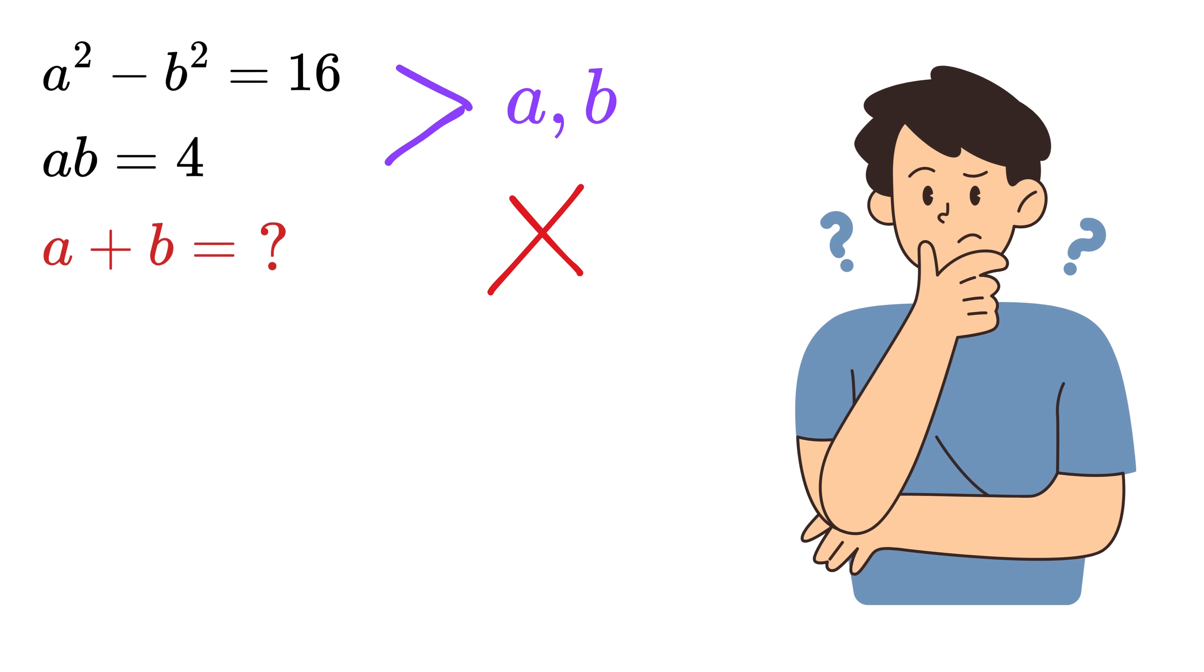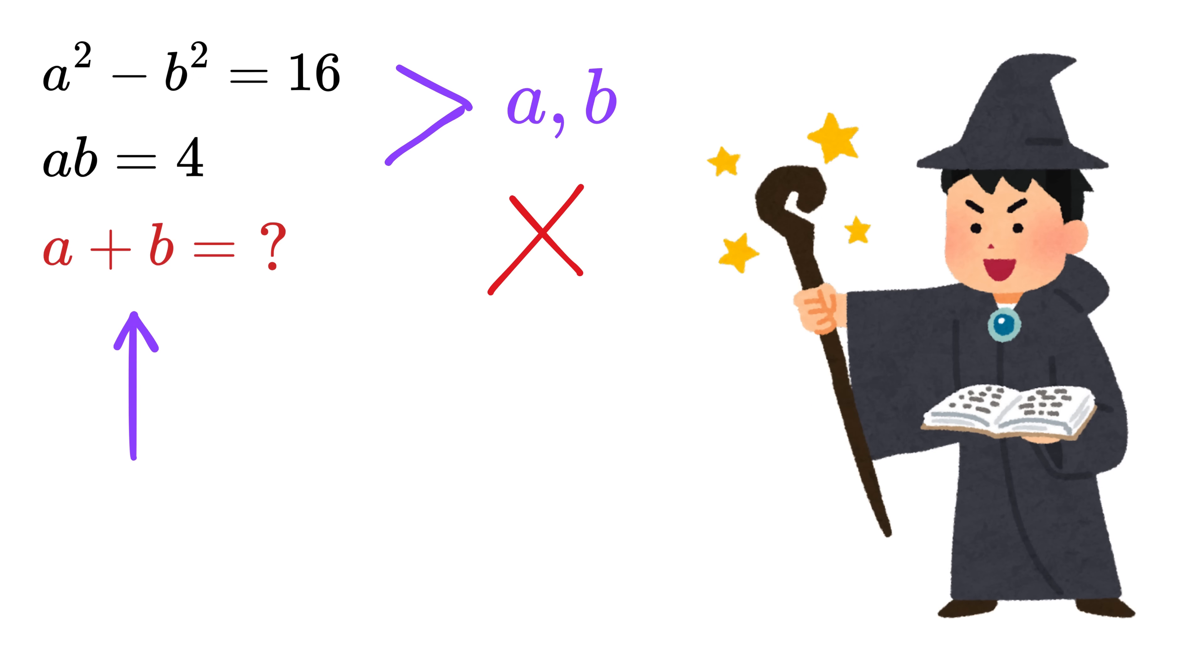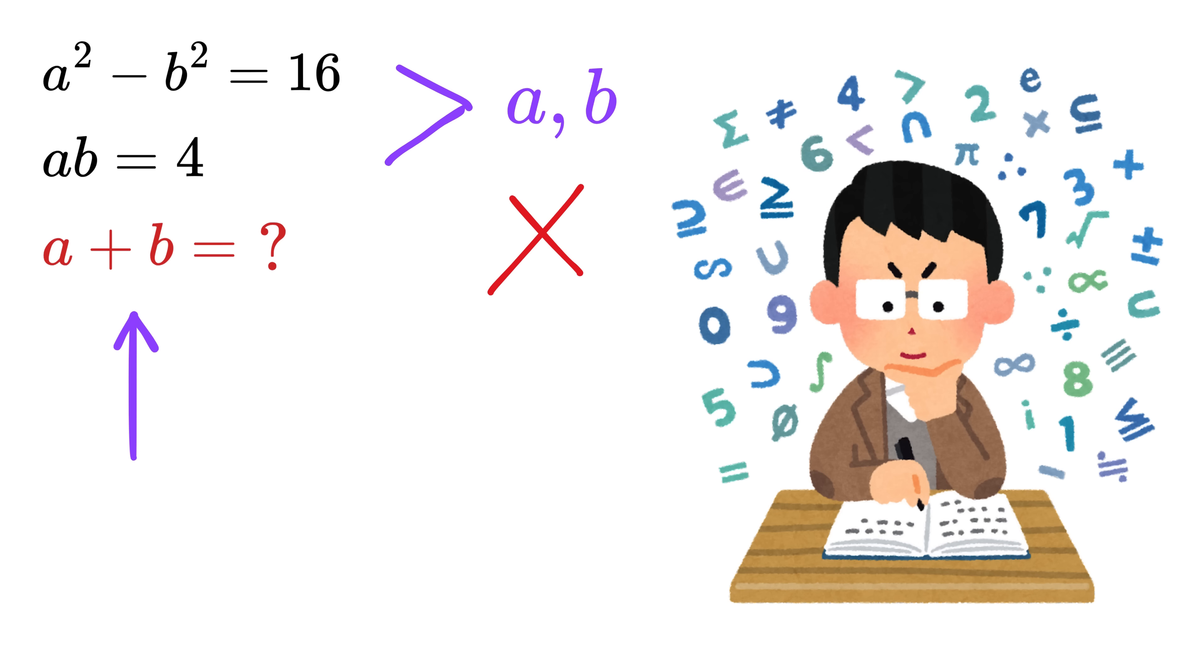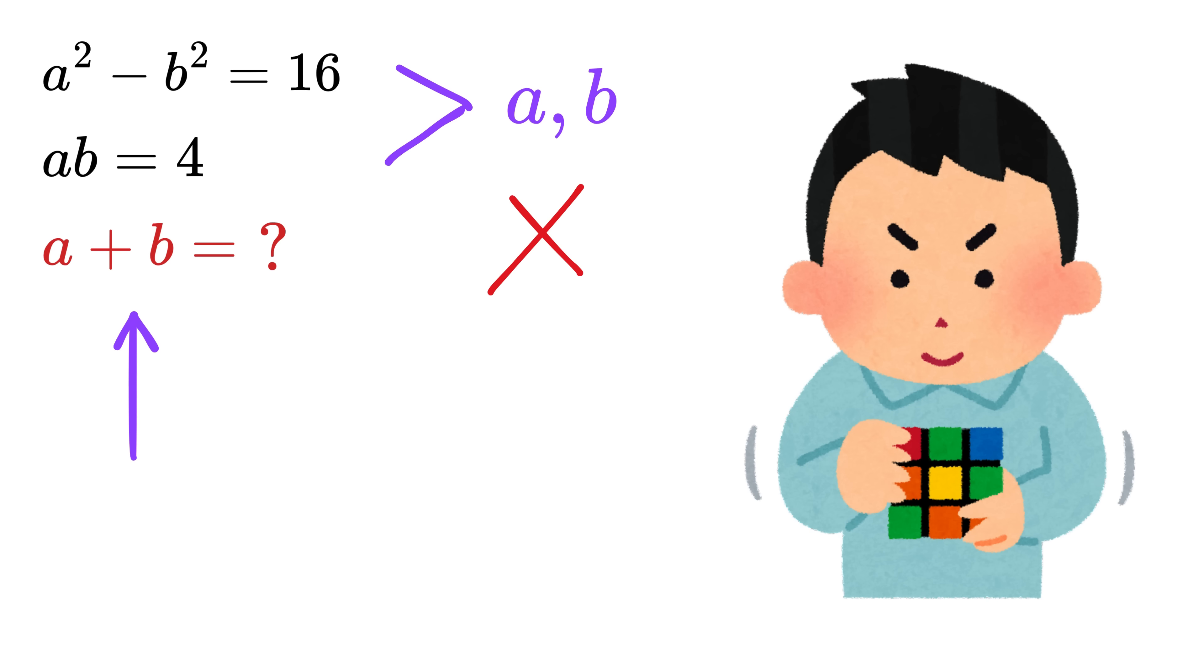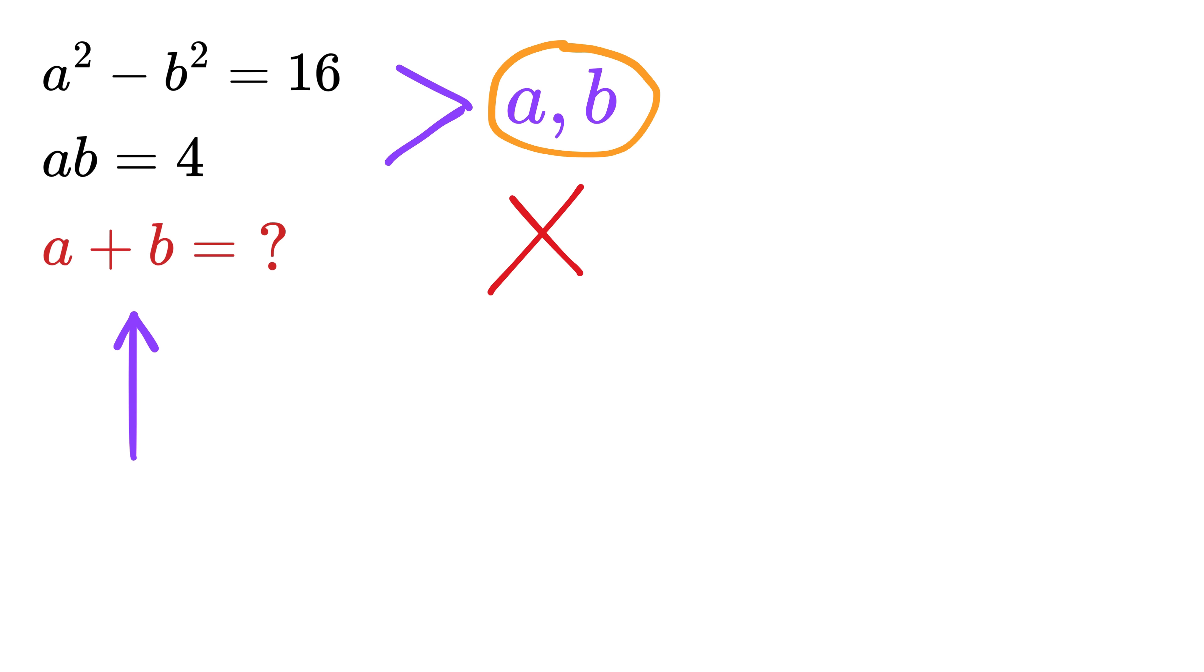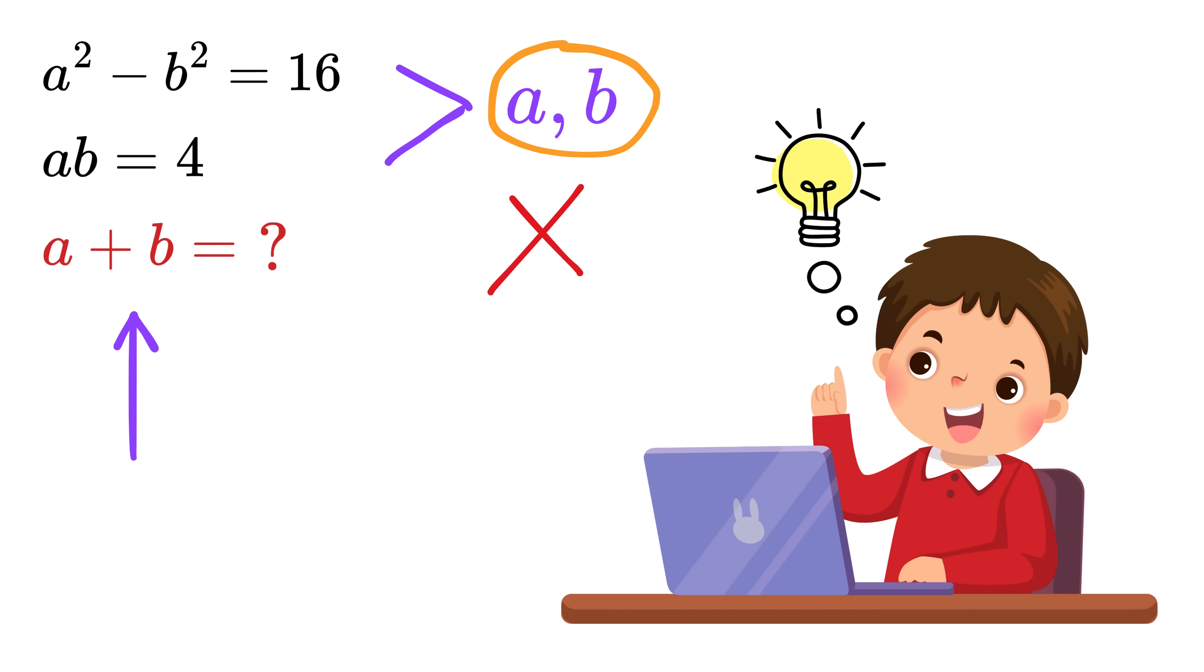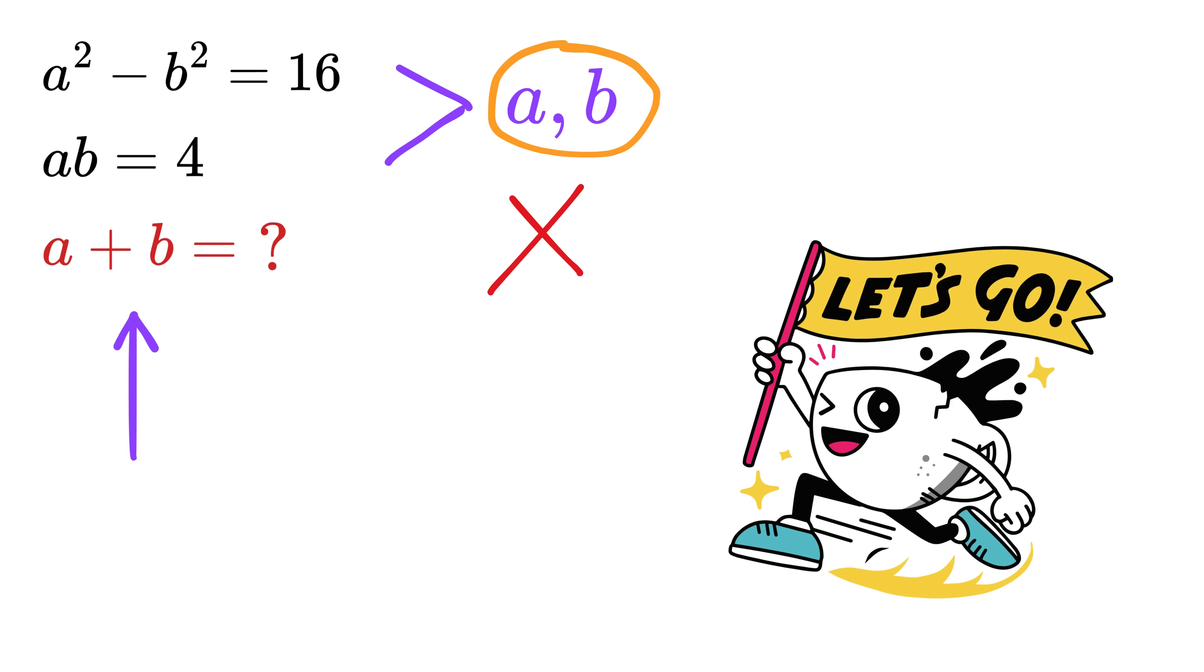The question isn't asking for A or B. It's asking for A plus B. Sometimes in math, the real magic comes when we shift our focus from solving everything to solving just what's needed. And here, instead of isolating A and B, we'll play smart and use standard identities to directly find the value of A plus B. Let's go.